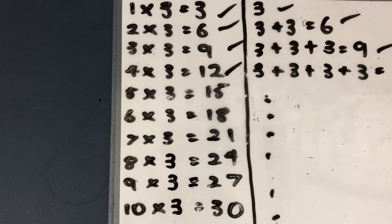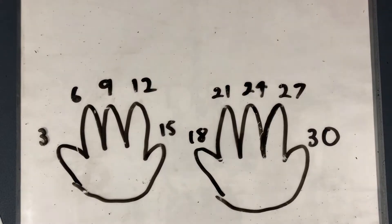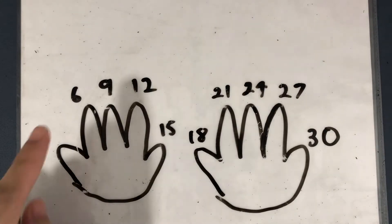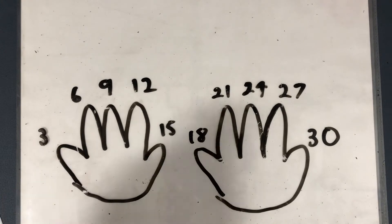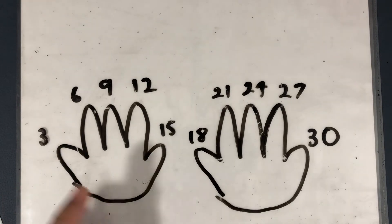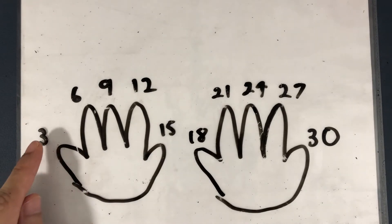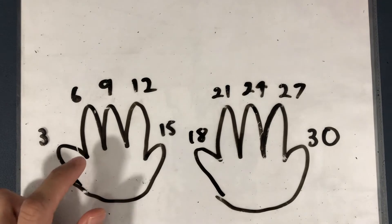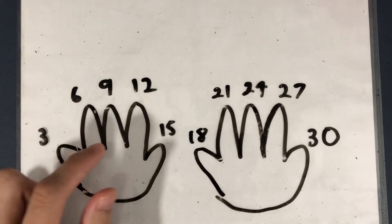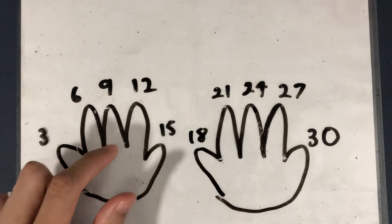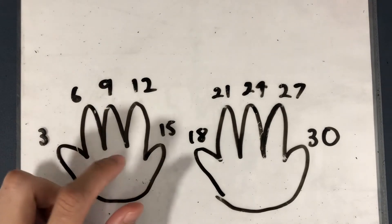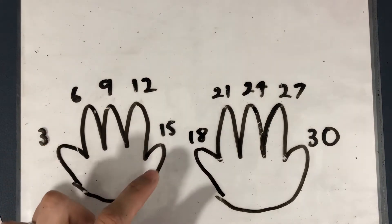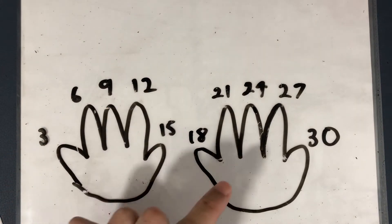I'm going to show you the diagram to help you memorize easier. This is the fast method of memorizing your 3 times table, starting from the 1st finger, which is 1 times 3, giving you 3. 2nd finger: 2 times 3 is 6. 3rd finger: 3 times 3 is 9. 4 times 3 is 12. 5 times 3 is 15.